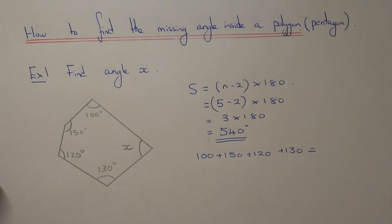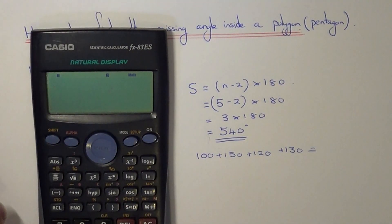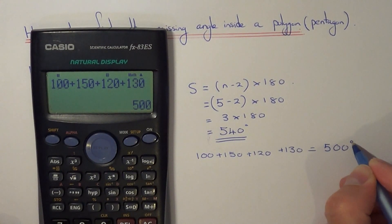So if you use your calculator to add these up, so we've got 100 plus 150 plus 120 plus 130, so that gives us 500 degrees.